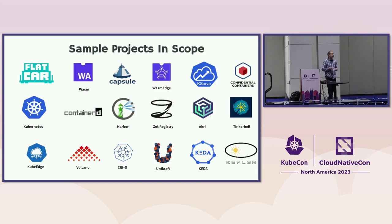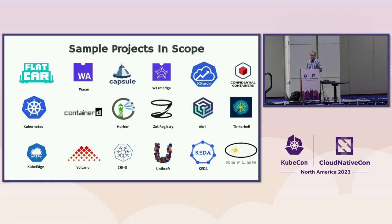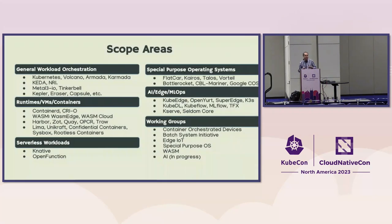These are some sample projects within the TAG Runtime scope. There's a variety of projects in different areas: Container D, a container shim, Harbor which is a container image registry, Kata which helps autoscale workloads with different metrics, and Unikraft which allows you to run unikernels. We loosely define these into scope areas: general workload orchestration where Kata and Kubernetes fit in, runtimes and VMs such as Container D and CRI-O shims. Lately there's been a lot of conversations around Wasm, so Wasm runtimes also fall within scope.